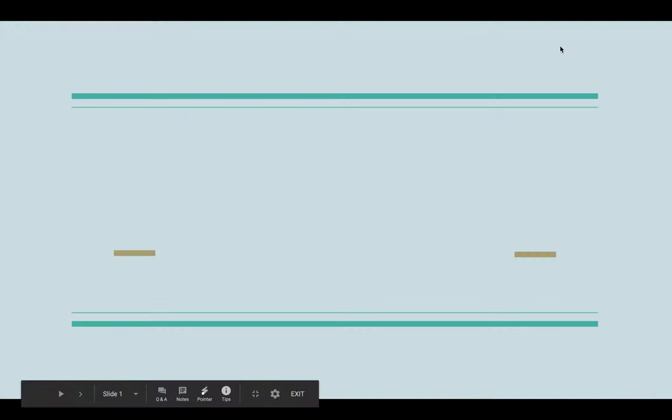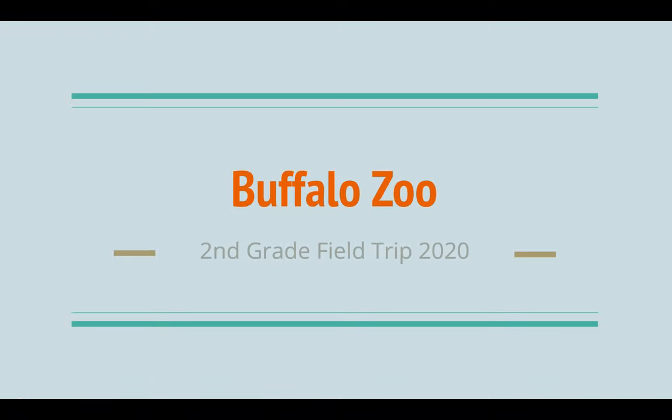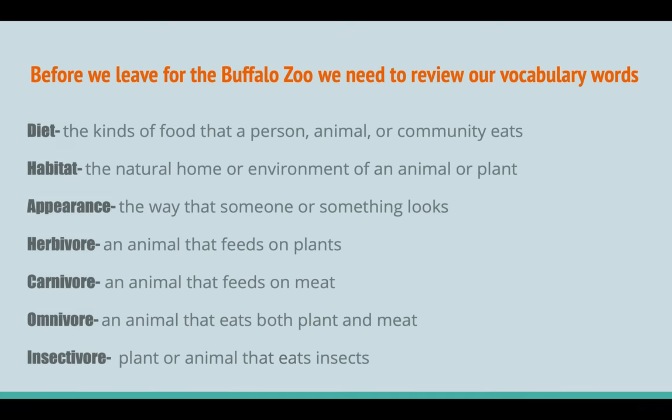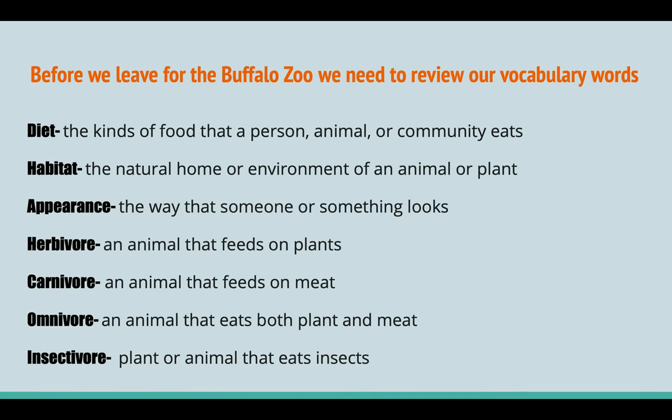I did my digital field trip on the Buffalo Zoo, focusing on second grade. For my first slide, I included vocabulary that I thought was essential for the students to know for the remainder of the presentation. I included diet, habitat, and appearance, which are the three key concepts I'm going to focus on for the rest of the presentation. I also included the four types of diets that were essential for the kids to know.